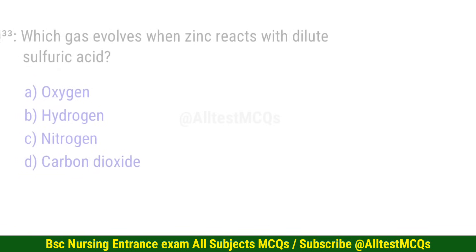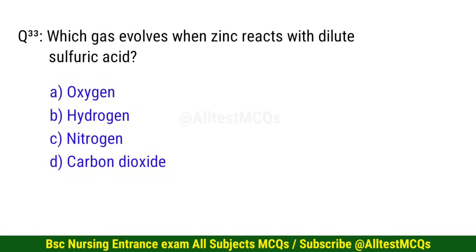Question number 33. Which gas evolves when zinc reacts with dilute sulfuric acid? The correct option is B: Hydrogen.